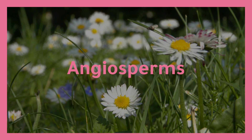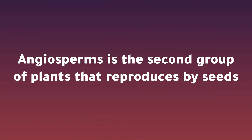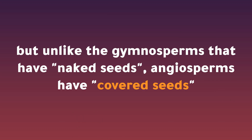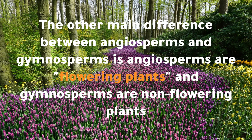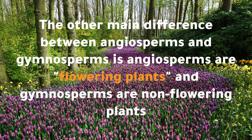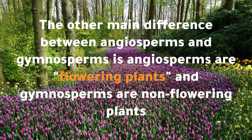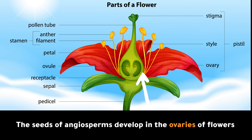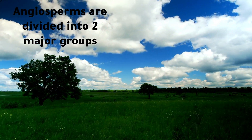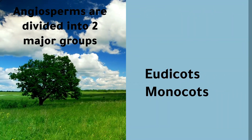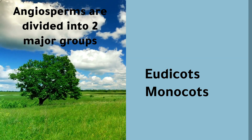Angiosperms. Angiosperms are the second group of plants that reproduce by seeds, but unlike gymnosperms that have naked seeds, angiosperms have covered seeds. The other main difference is that angiosperms are flowering plants and gymnosperms are non-flowering plants. The seeds of angiosperms develop in the ovaries of flowers and are also surrounded by a protective fruit. Angiosperms are divided into two major groups: eudicots and monocots. Each group differs in several plant features.